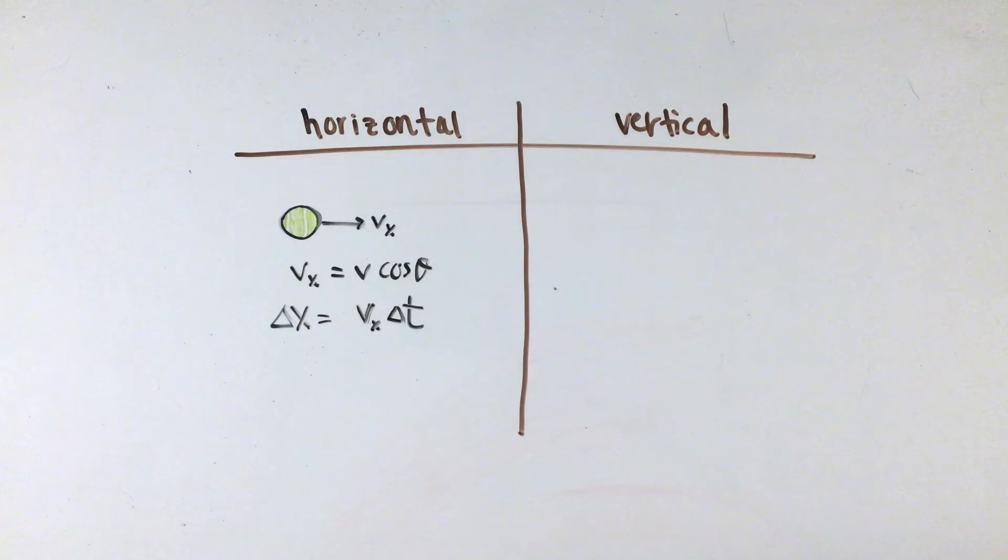Looking at the horizontal component, there is no acceleration along the x-axis, as in AP Physics 1 we deal with situations without air resistance. Because of this, the horizontal motion of a ball being thrown will follow a constant velocity scenario, making these equations all that you'll need to know for x directions.